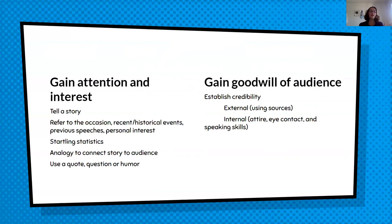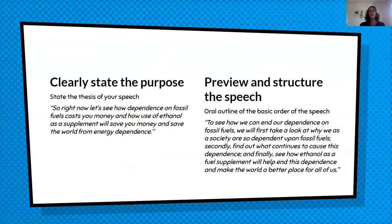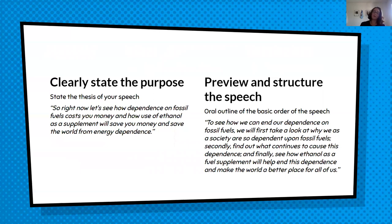According to research done by Smith and Johnson in 2017. When you clearly state the purpose, you are stating the thesis of your speech. So your thesis might be: 'Let's see how dependence on fossil fuel costs you money, and how the use of ethanol as a supplement will save you money and save the world from energy dependence.' Then previewing the structure, you go from the purpose right into the preview: 'We will first do this; secondly, we'll do this; third, we'll talk about this thing; and to end it, this is how we'll end it.' That gives people a flash-forward of what they're going to be seeing and listening to.